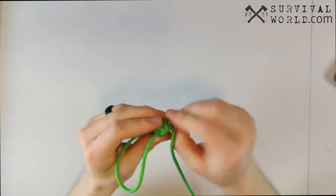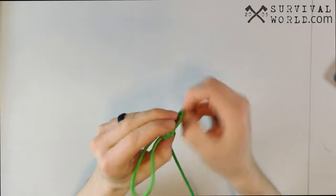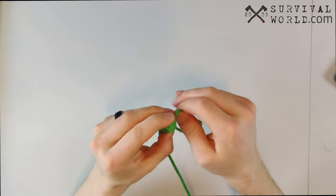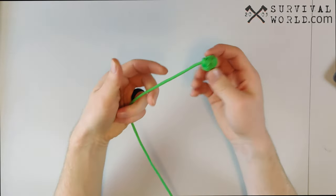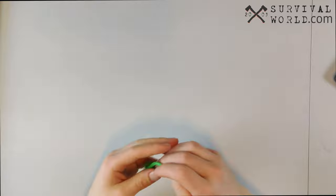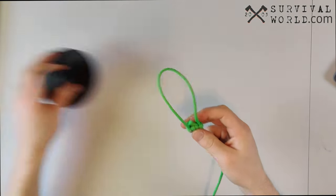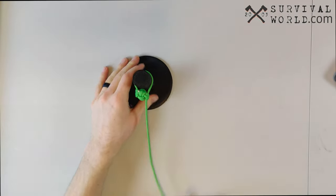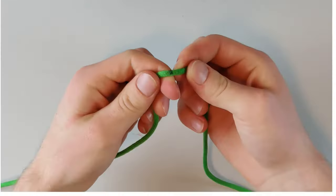And boom, that is our fully tied monkey's knot. Now again, it's really easy when you're chucking this knot to shore. You can just have a nice slip knot by pulling that section of the knot loose, wrapping it around something, and it's a very secure knot. Yeah, that's how you tie the monkey's fist knot.